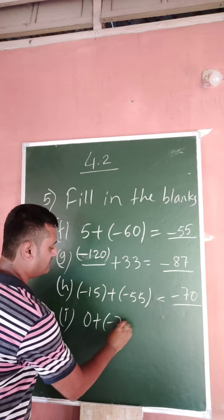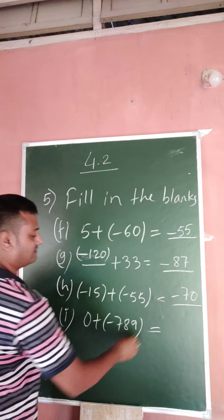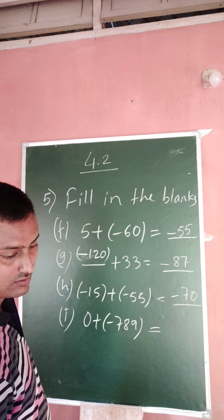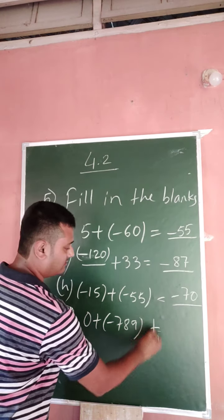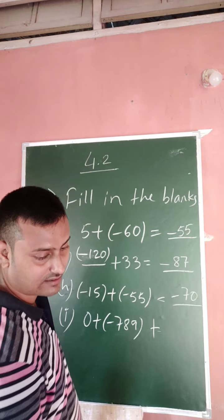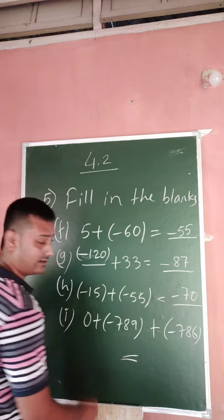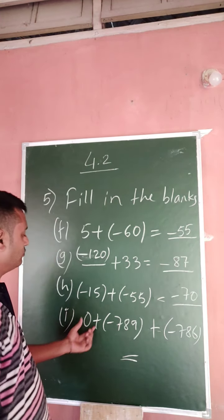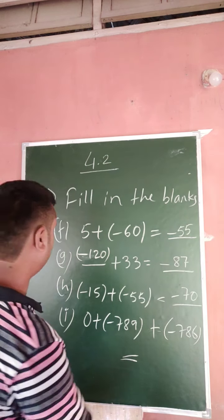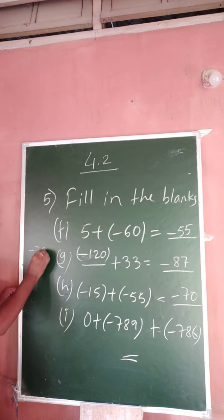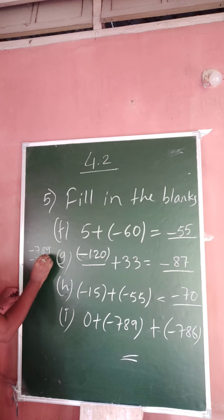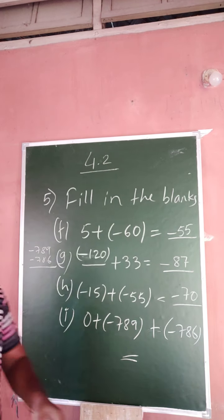Plus minus 789. So very easy. Yes, plus minus 786 plus 786 equals what? Obviously, no need of 0. That is minus 789 minus 786. You just add, both are negative.